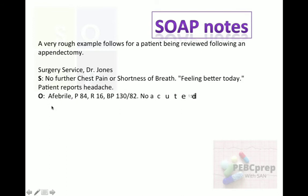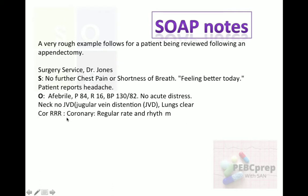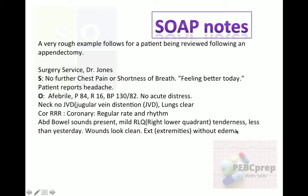In the objective component he wrote: afebrile, pulse rate 84, respiratory rate 16, blood pressure 130/82, no acute distress. Neck: no JVD — jugular vein distension. Lungs: clear. Cor: RRR — regular rate and rhythm. Abdomen: bowel sounds present, mild right lower quadrant tenderness less than yesterday, wound looks clean, extremities without edema. These are the findings that the physician can observe during the visit to the patient.